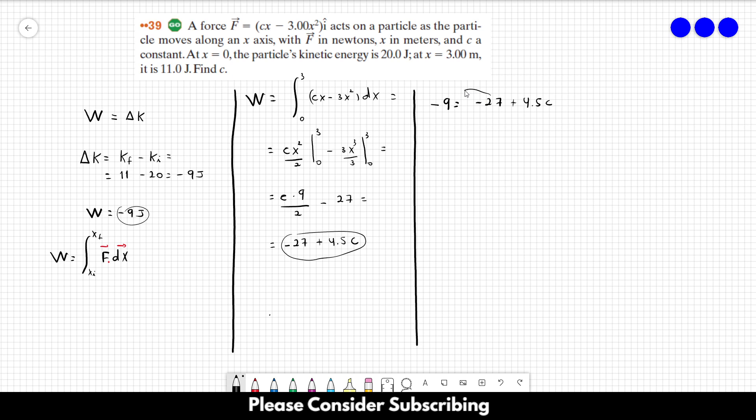So we can send this to the other side. So 18 is equal to 4.5 C. So C is equal to 4. And we have to find the unit of C, which is kind of simple. You just take this part of the equation over here.